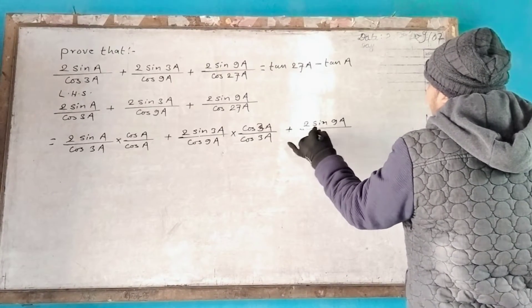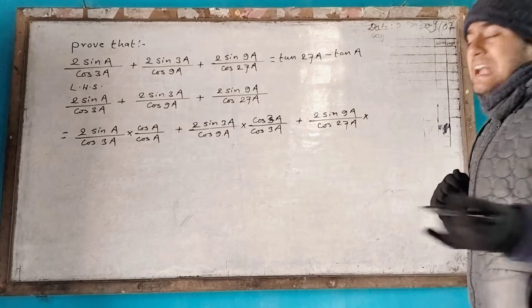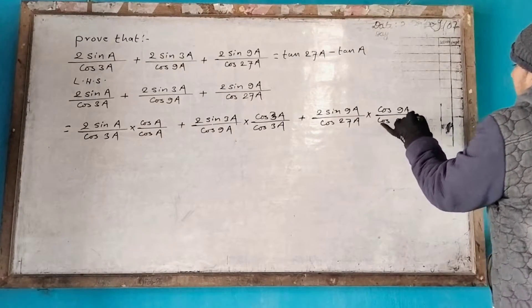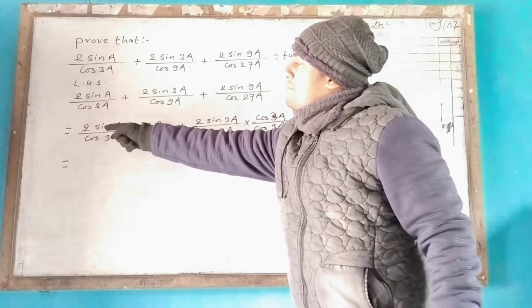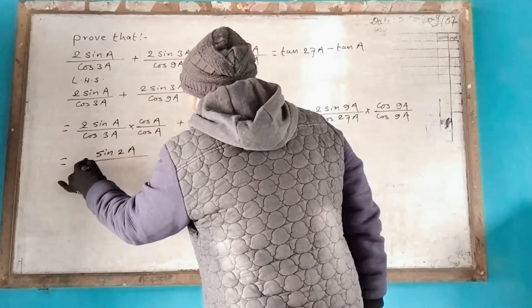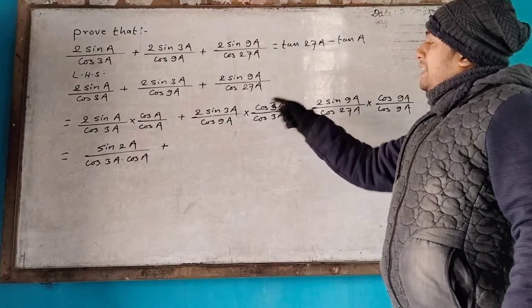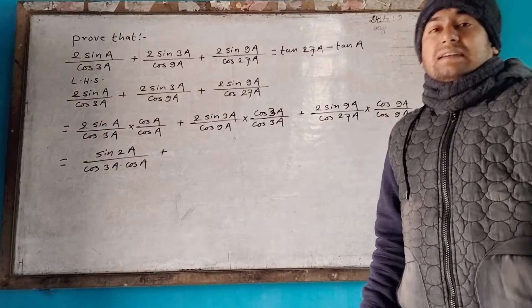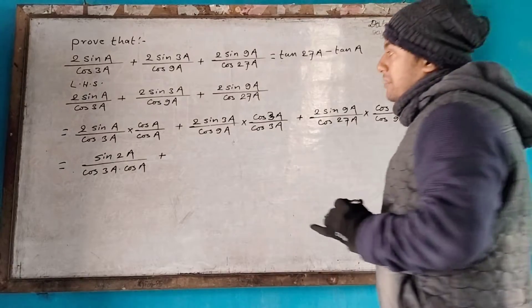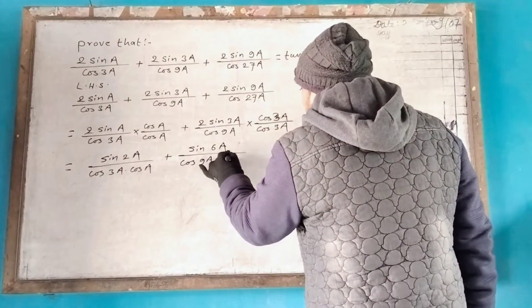2 sin 9a divided by cos 27a, 2 sin a into cos a, 3a into cos a. Then 2 sin 3a into cos 3a, 2 sin a into cos a, divided by cos 9a into cos 3a.